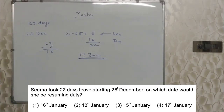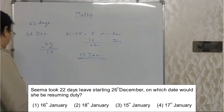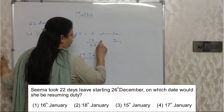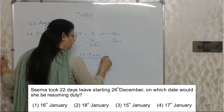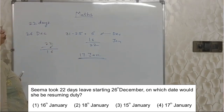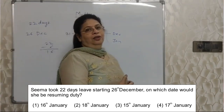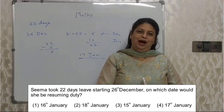Here again, reading part — what they have asked is very, very important. Up to 16th she will be on vacation, on leave. So the next day, that is 17th January, she will resume office. Students often make the mistake of choosing 16th, and 16th may be there as one of the options — please be careful. They are not asking which is the last day of her vacation; they are asking on which day she will resume duty. So the answer is 17th January. Revise this calendar topic thoroughly.